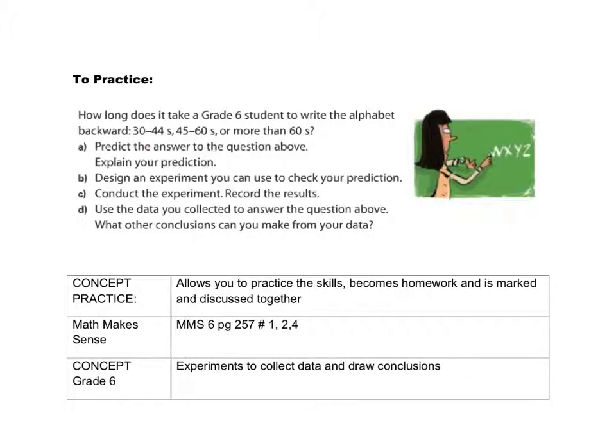Alright. So, with the design of your experiment, you should have some sort of a timing device. You should have a grade 6 student and probably more than one. Okay. So, choose a couple people in your group if you haven't already.